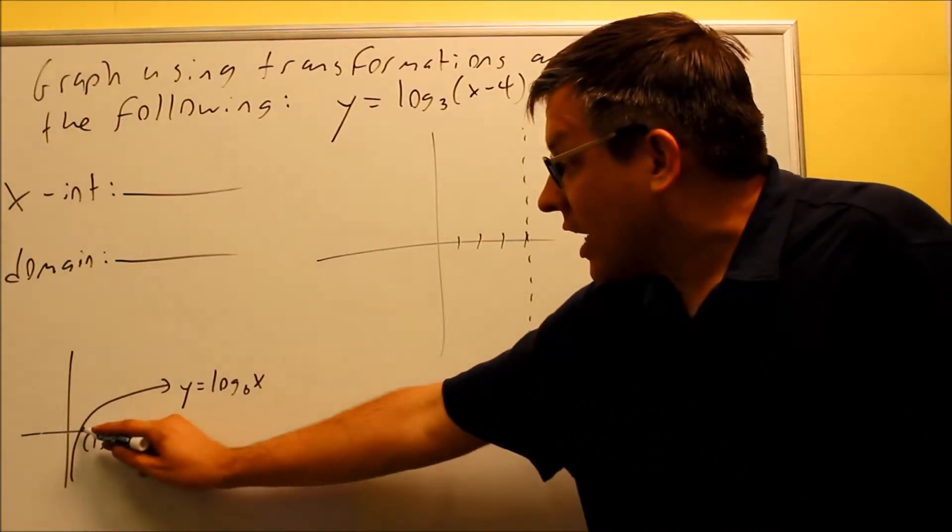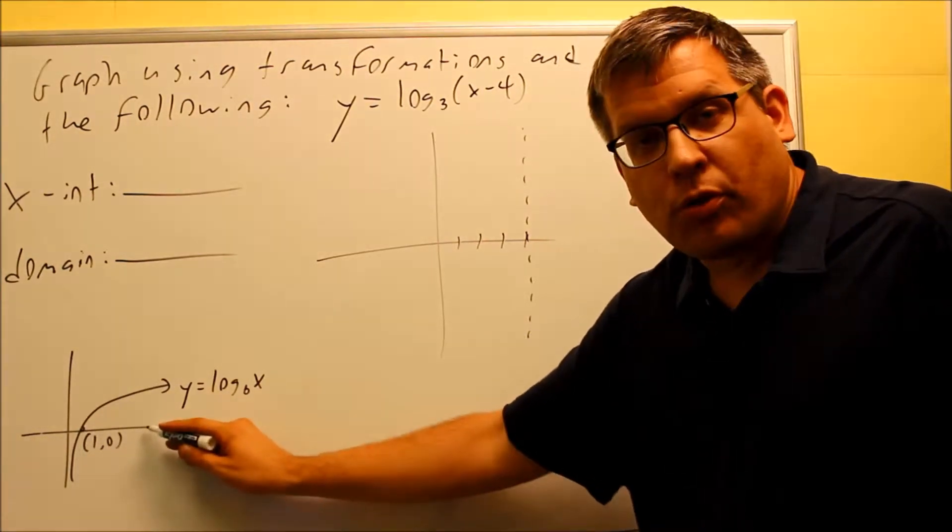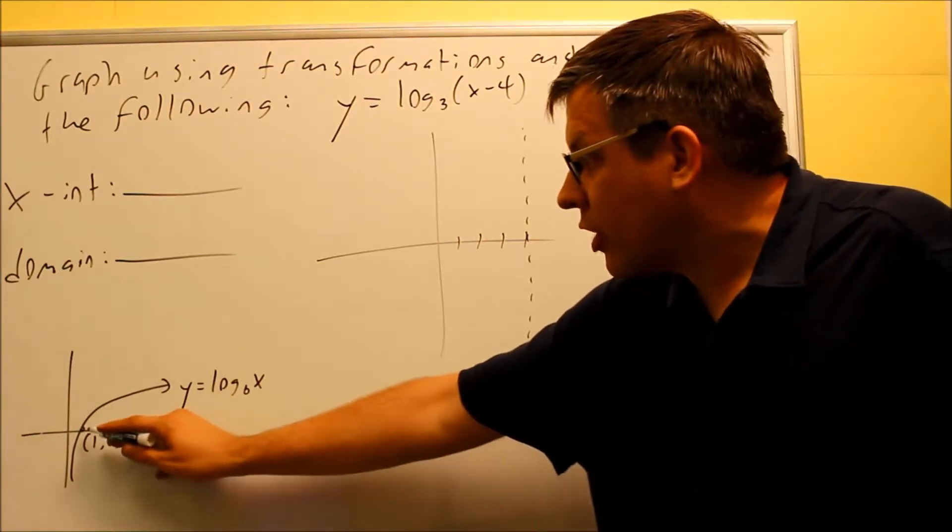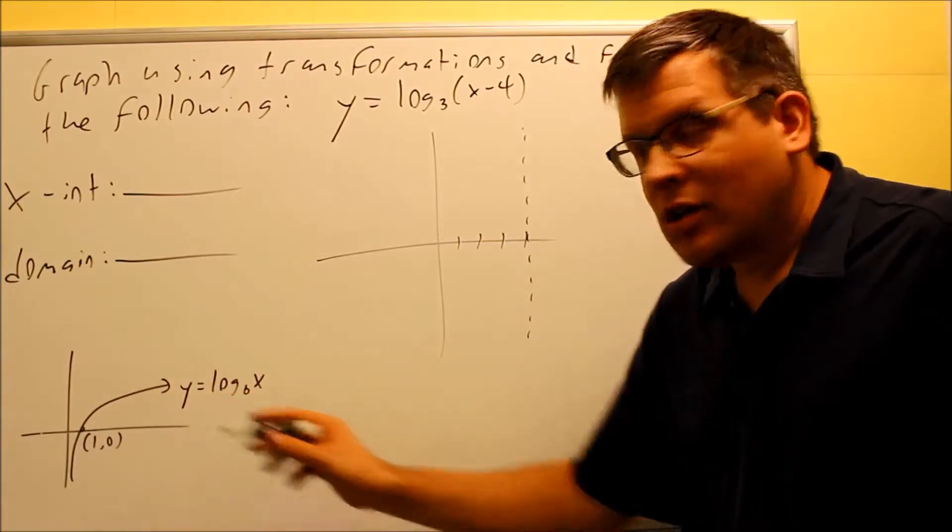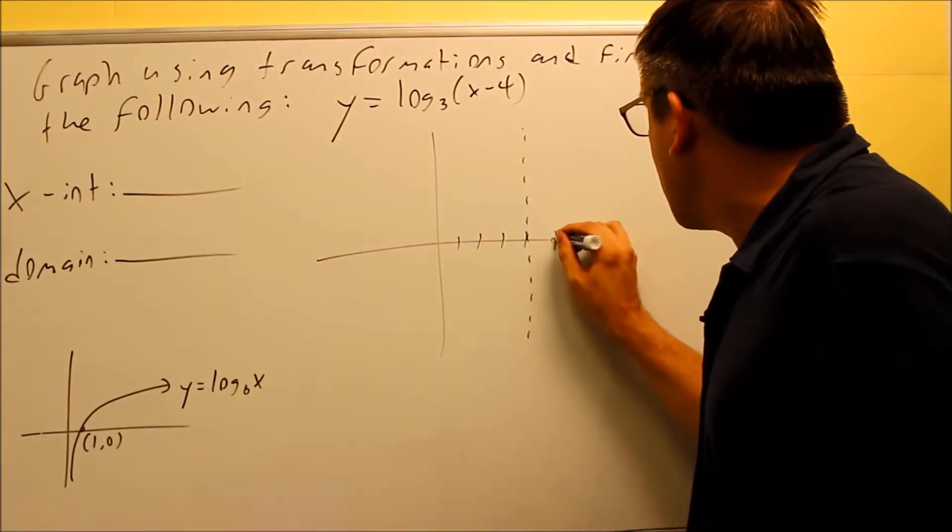Now, this original dot here that was at one comma zero, that also moves four places over to the right as well. So if we're at one and we're going to add four to it, that means that we're going to be at five. So we're going to be right here.